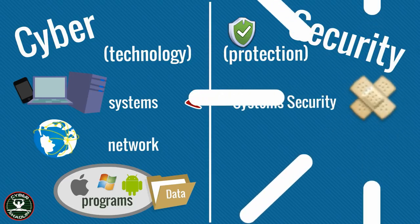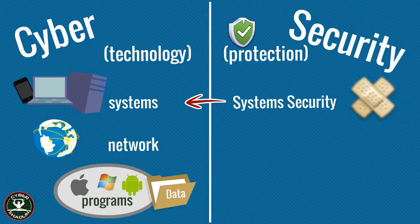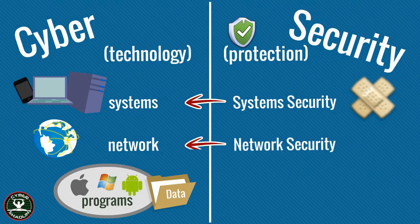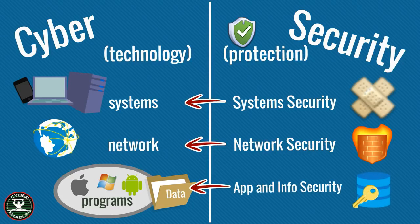When systems are protected, it is known as system security. Patching is an example of system security. When computer networks are protected, it is called network security. A firewall is one part of network security controls. When software programs are made secure, it is known as application security. When data is made secure, it is known as information security.